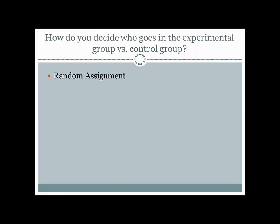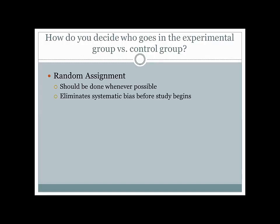The best way to do this is random assignment — you want to randomly assign people to different conditions whenever you possibly can. The reason is it eliminates systematic bias before a study begins. One common misconception is that random assignment makes the groups equal, because that just isn't true — it's impossible to have completely equal groups ahead of time. For example, let's say I had ten people I was going to put on basketball teams, two teams of five. All else being equal, it's an advantage in basketball to be taller.